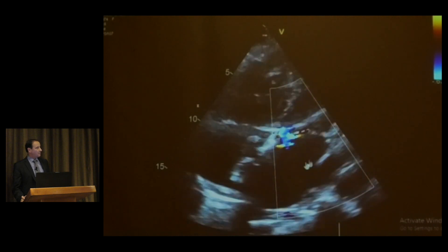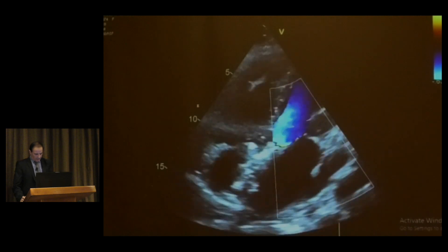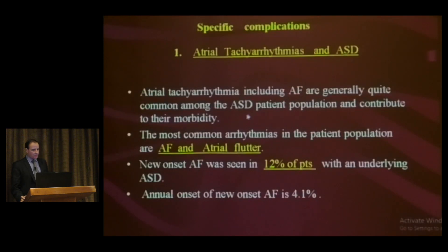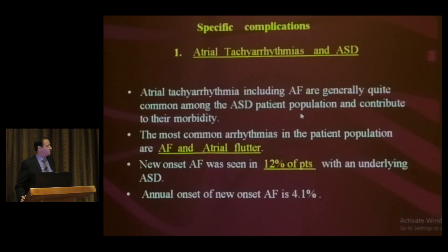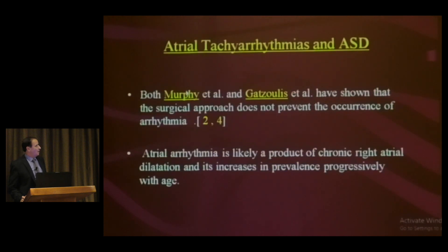After that, we checked and confirmed no mitral regurgitation and no tricuspid regurgitation. Regarding complications: first, atrial tachyarrhythmias are quite common among ASD populations and contribute to morbidity. The most common are atrial fibrillation and atrial flutter. New-onset atrial fibrillation was seen in approximately 12% of cases.